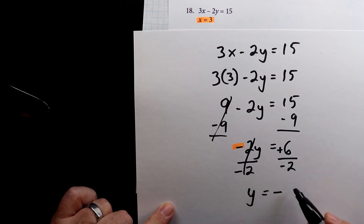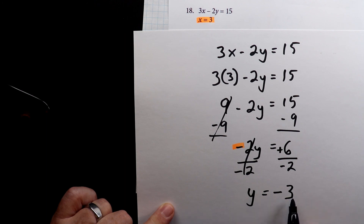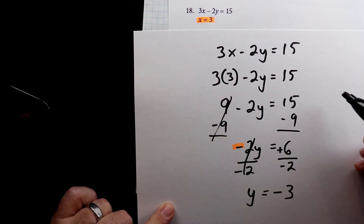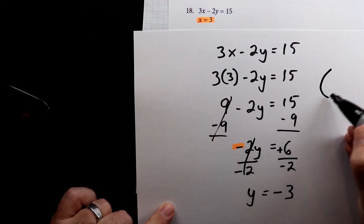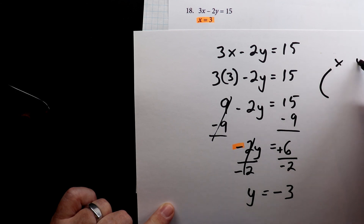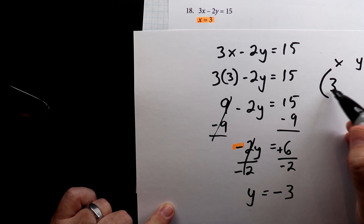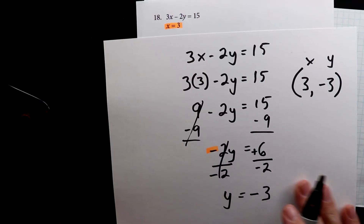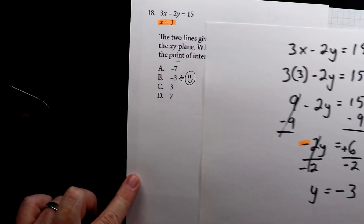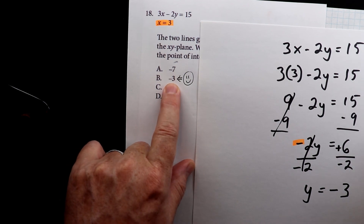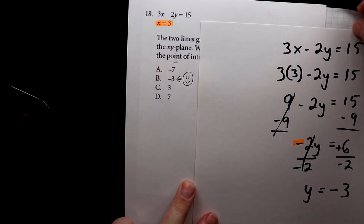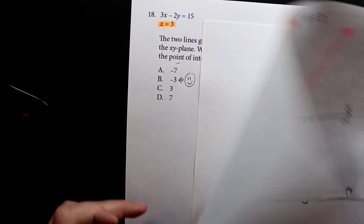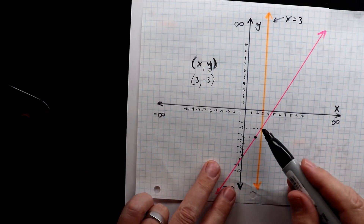So y is negative 3. Going back to the original problem, the y-coordinate is negative 3. And on the graph, it lines up — we've proven that the point of intersection is positive 3 for x and negative 3 for y.